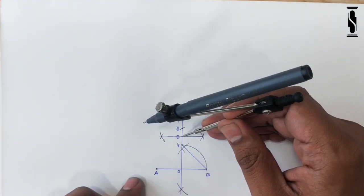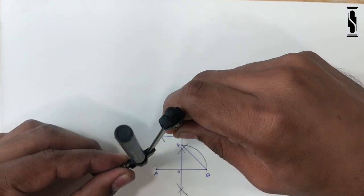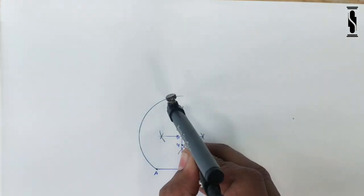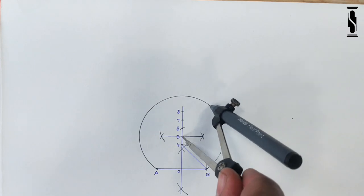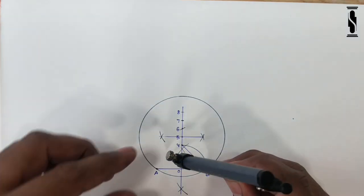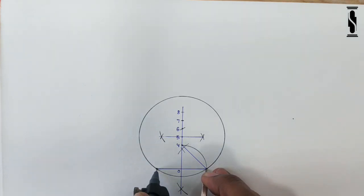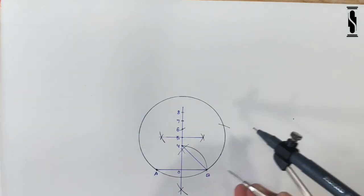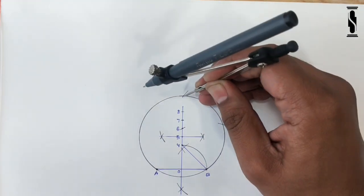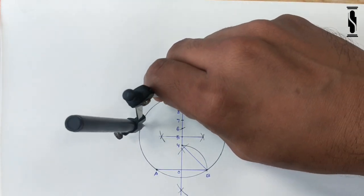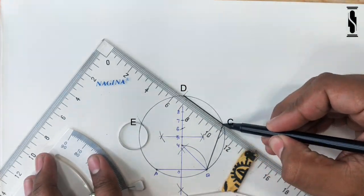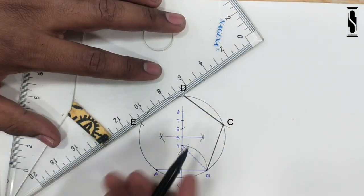Now, to construct a regular pentagon with this method, make a circle by taking point 5 as center and 5A as radius. With point B as center and length of AB as radius, mark point C on the circumference of the circle. Repeat the same process to mark points D and E. Now join B to C, C to D, D to E, and E to A to complete the pentagon.